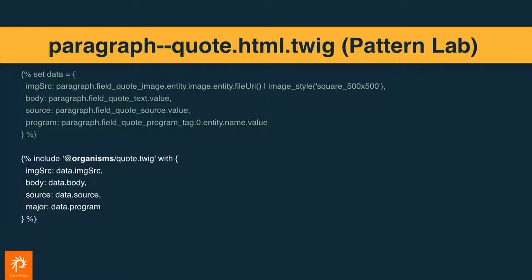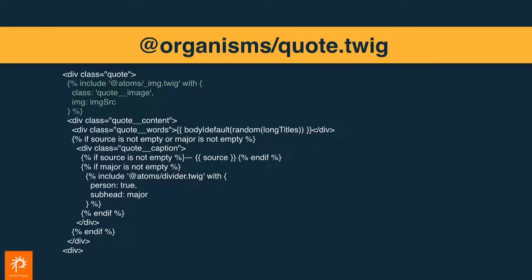Part of this was talking about atomic design. Now, from that previous example, I'm going into a Pattern Lab example where we are starting to break out even the individual components of that quote into their smaller atoms. Here we're using the organism - that template we saw before would be in quote.twig. We have our image source, body, the source of the quote, and the program. Since an image is a smaller atom than the whole quote, we can actually theme the image separately, which further simplifies our markup. We theme the image separately, and if we need to change the image style, we can deal with a different template - then we're just pulling in and injecting that markup to actually render the image itself.